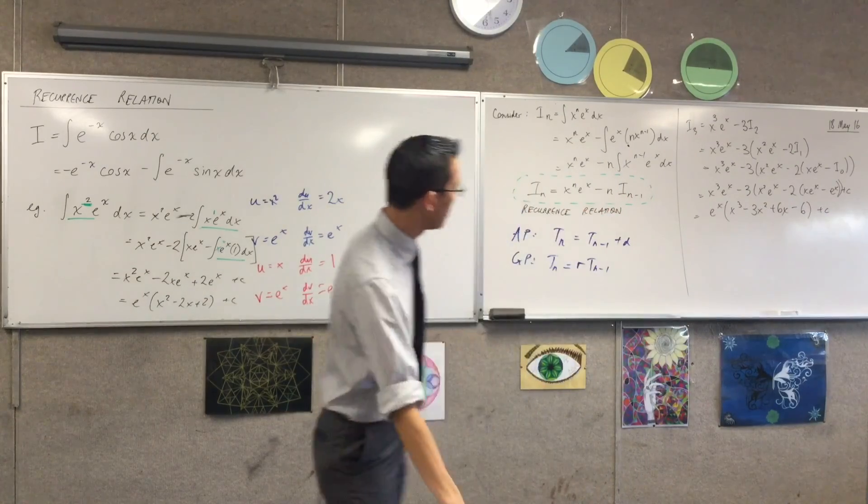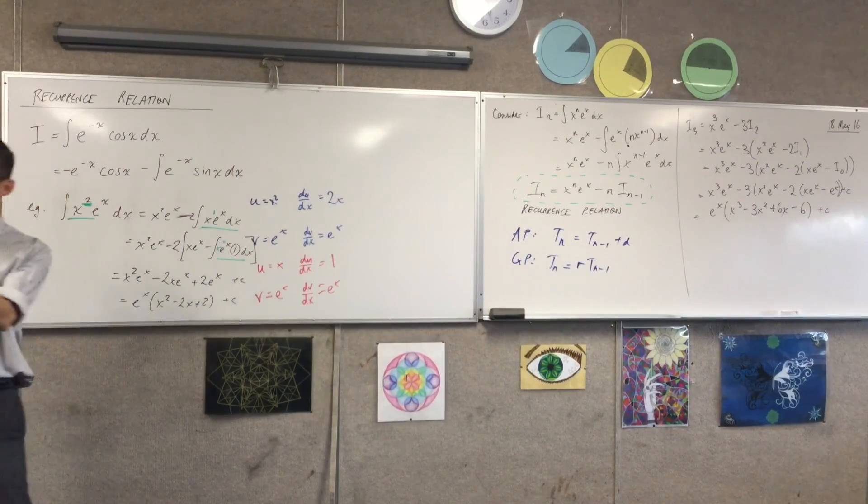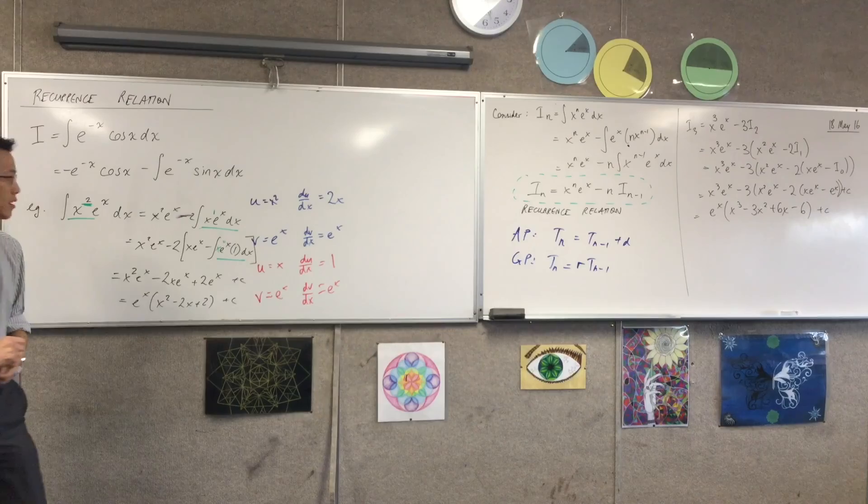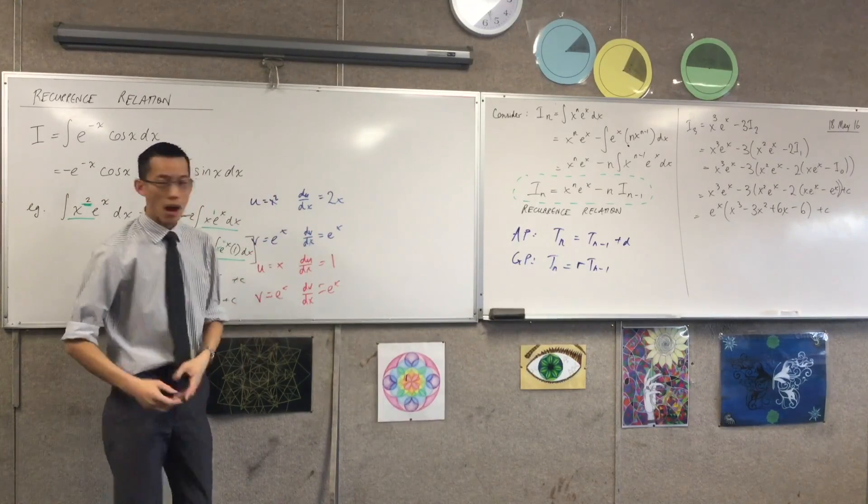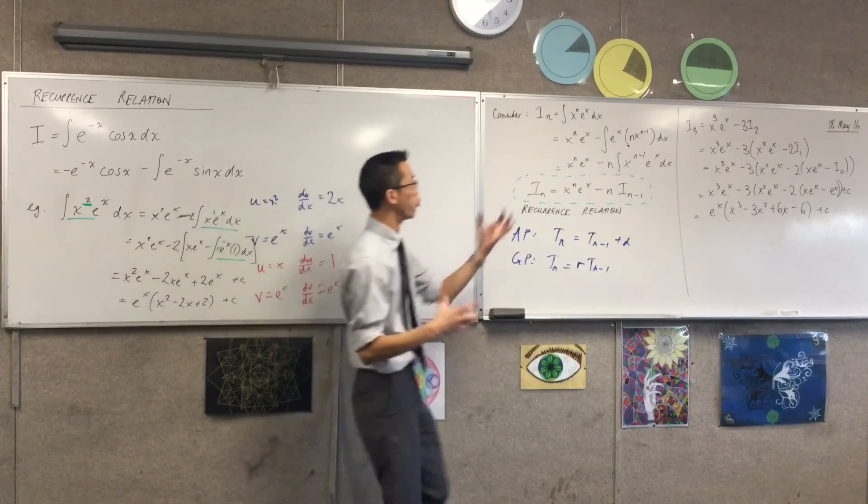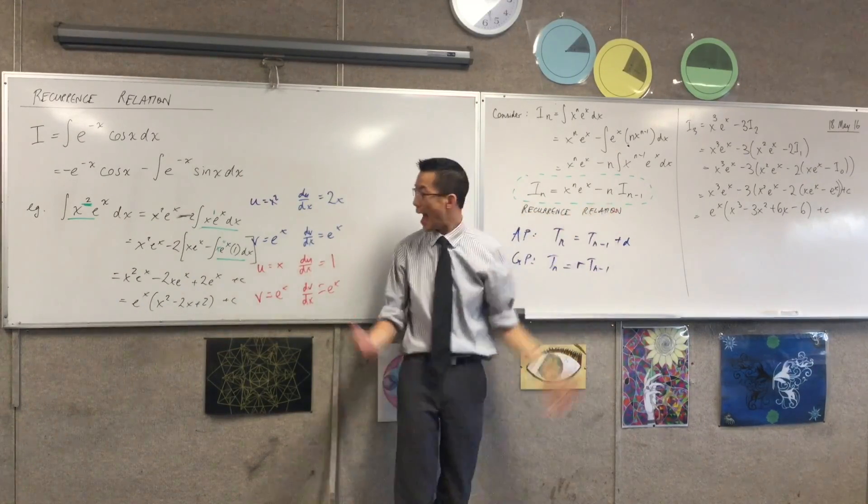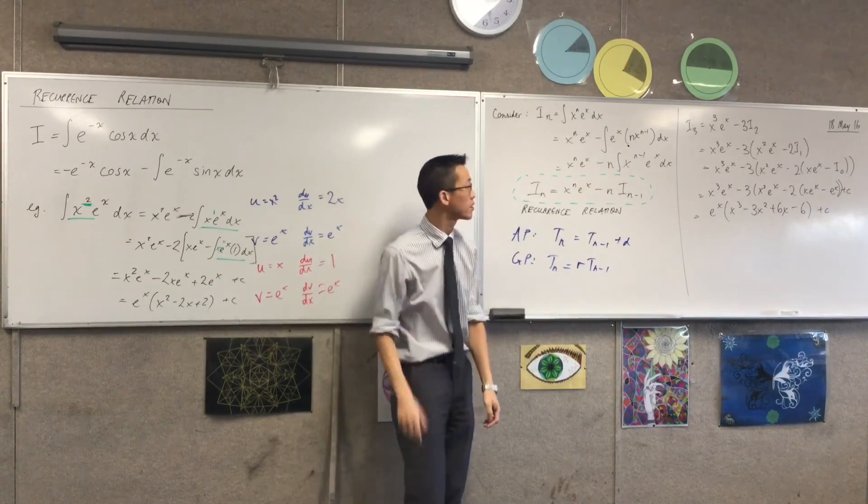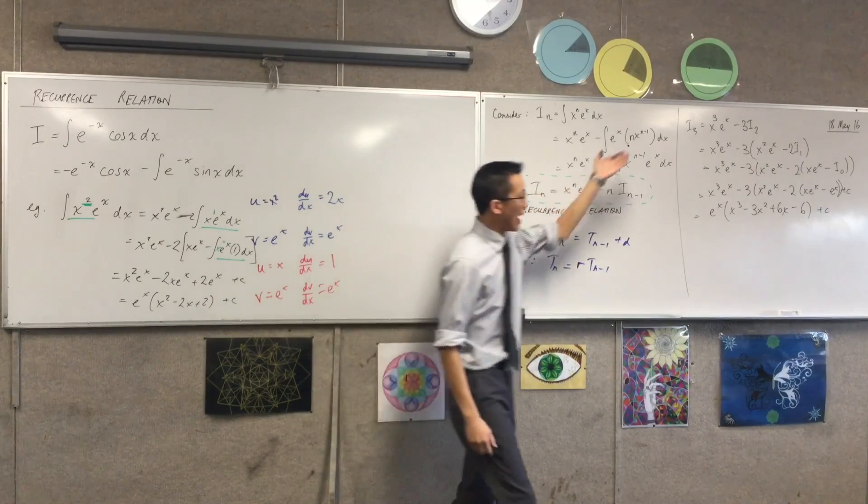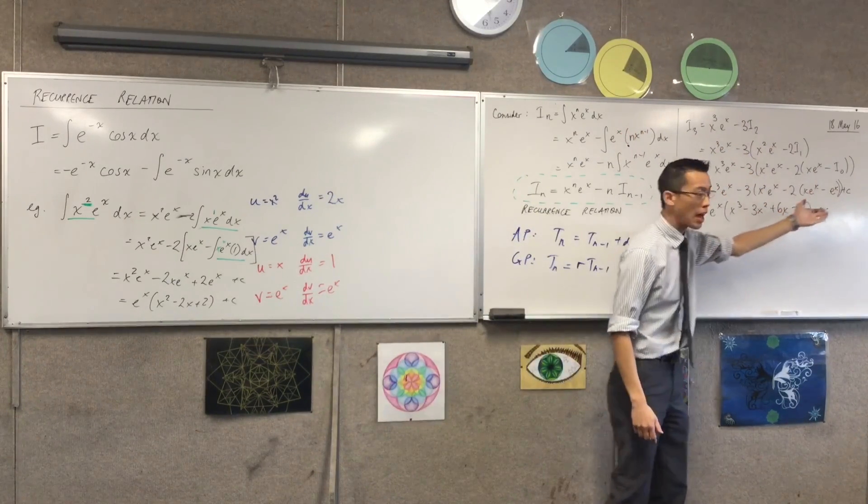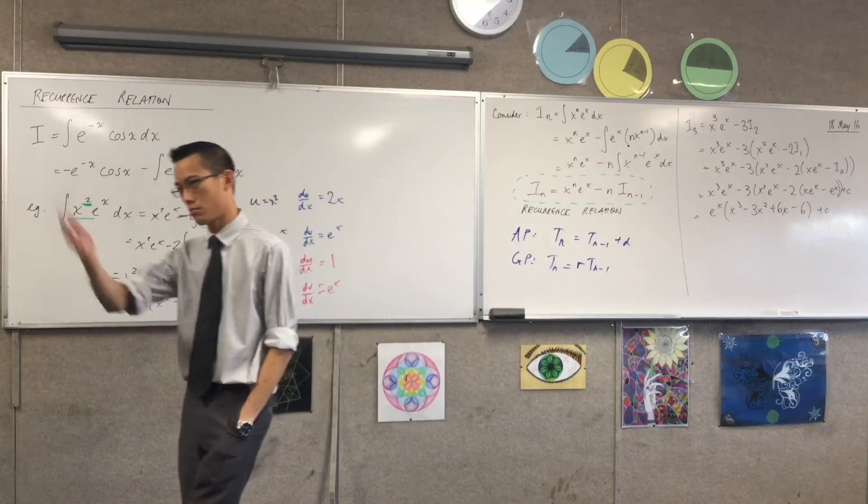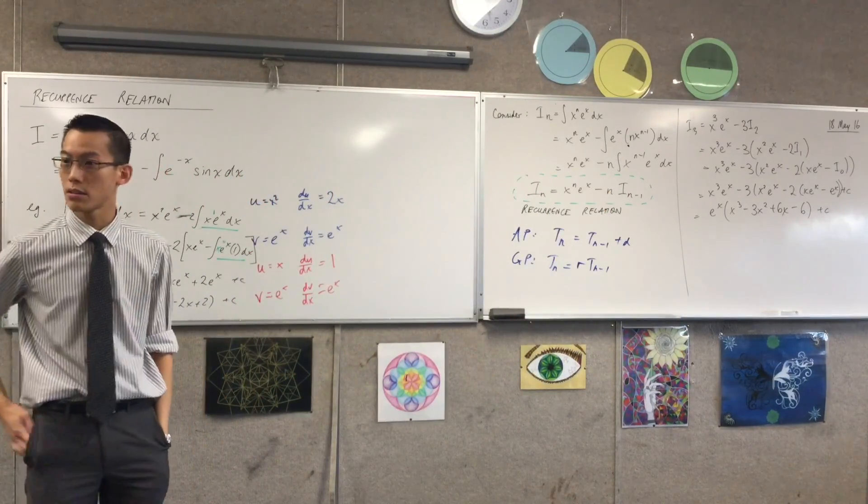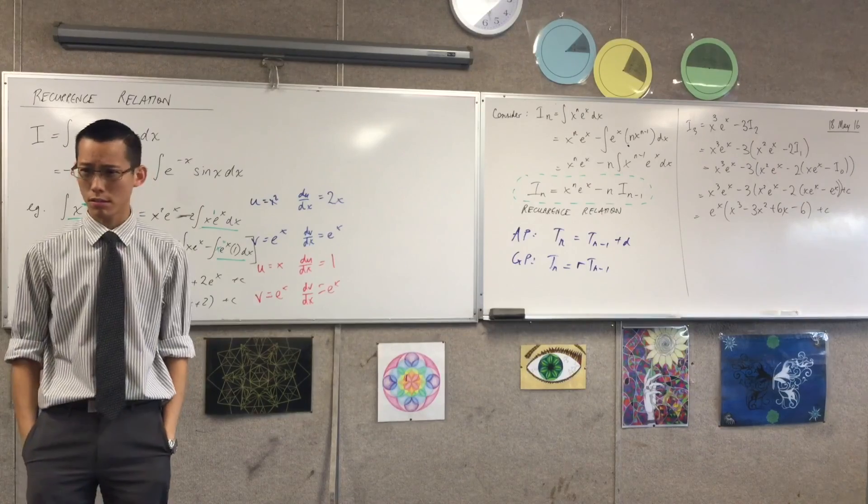So you can see here, having done a single application of integration by parts, being that all I'm really doing is doing it over and over and over again, I've incorporated that, I've built a rule, a recurrence relation, out of my first application of integration by parts. And then once I have that rule, I can just use that rule multiple times to climb down the ladder, as it were, and get down to something which just gets evaluated, which is I_0 in this case. Does that make sense?